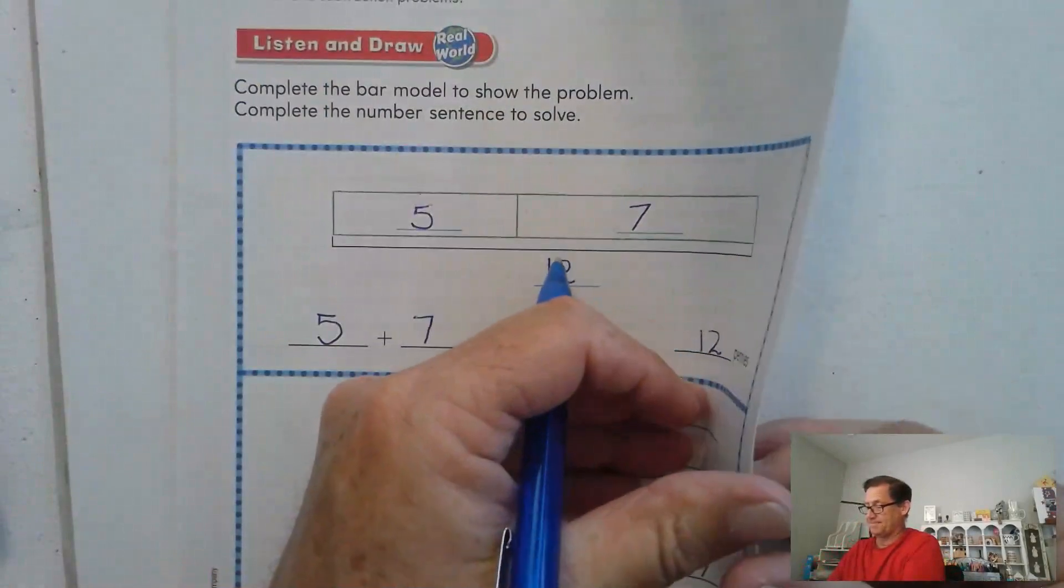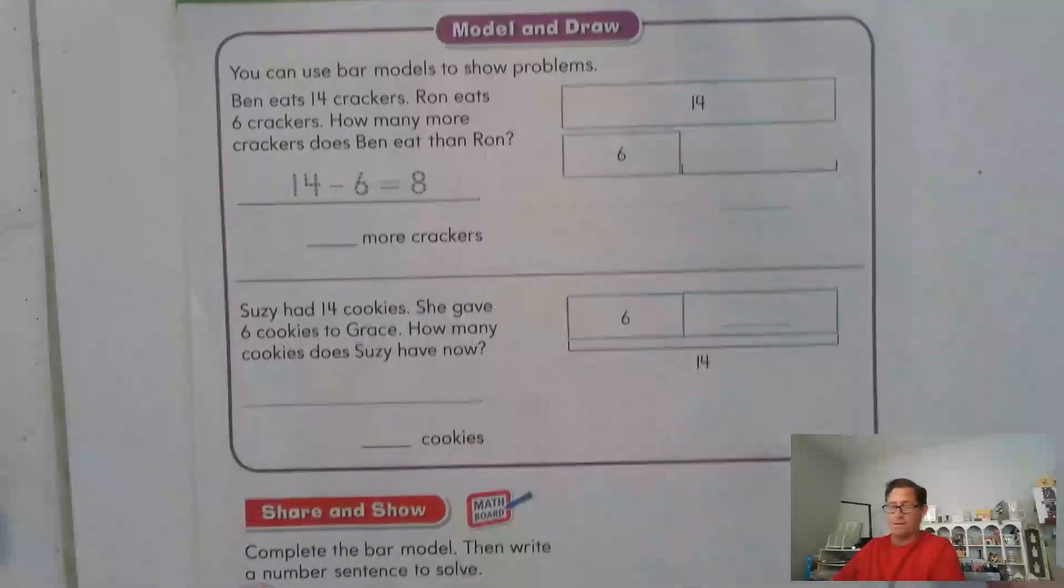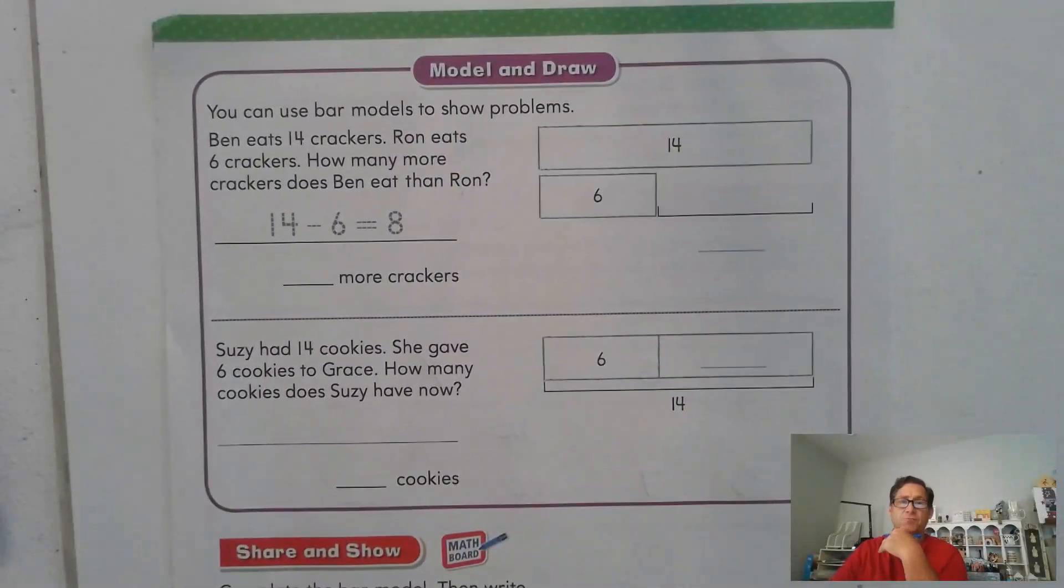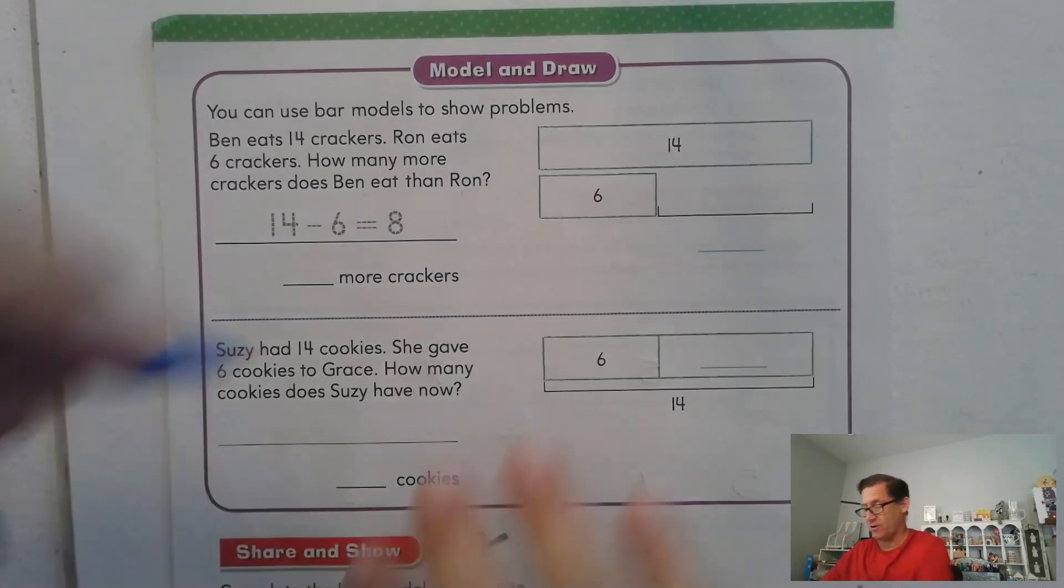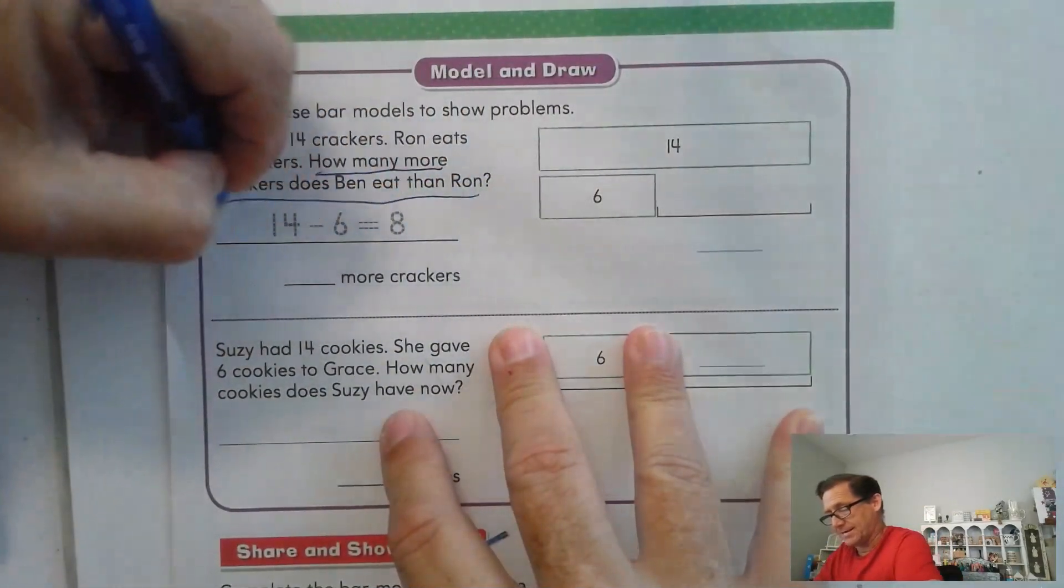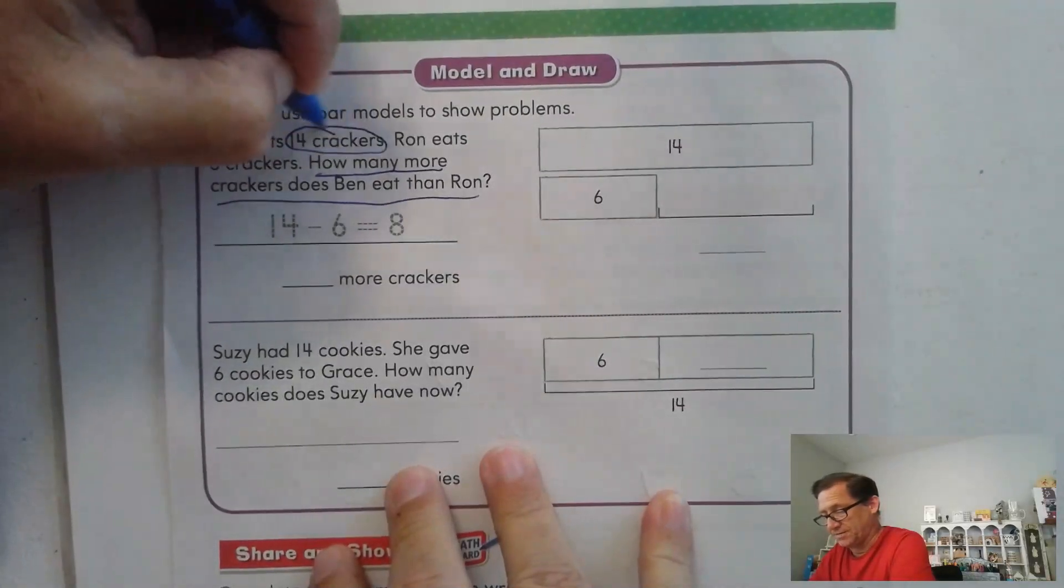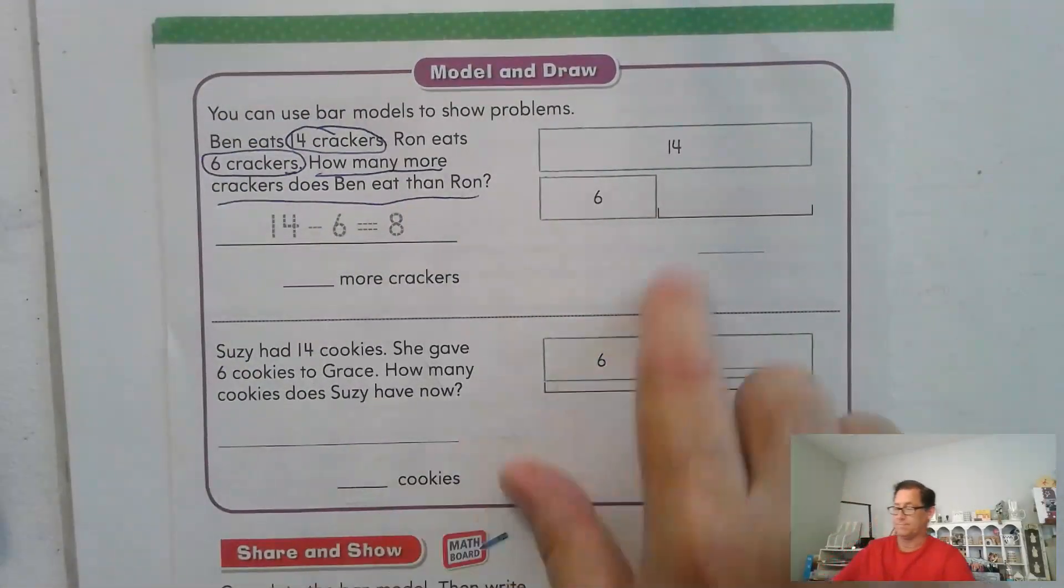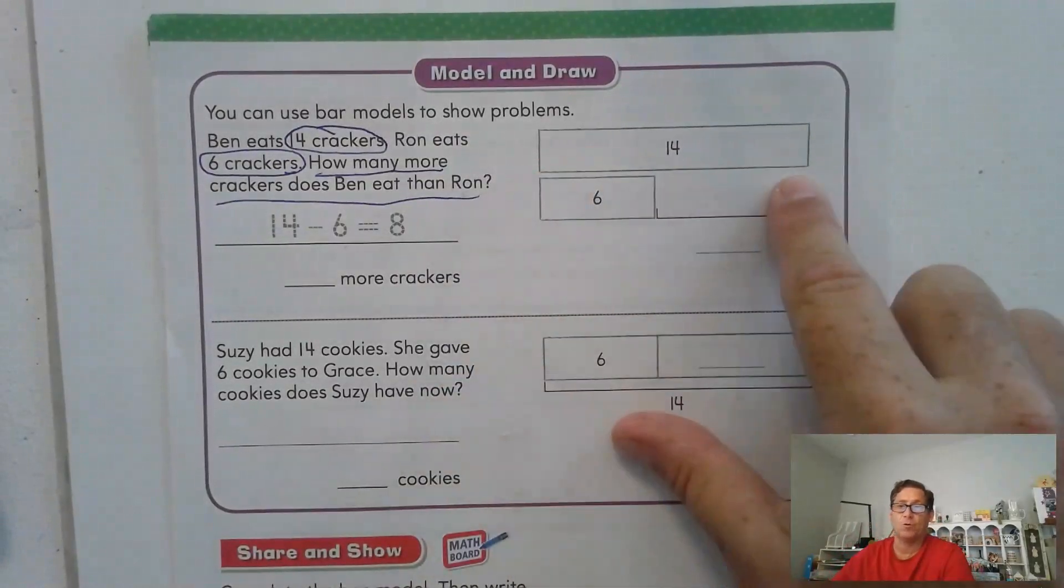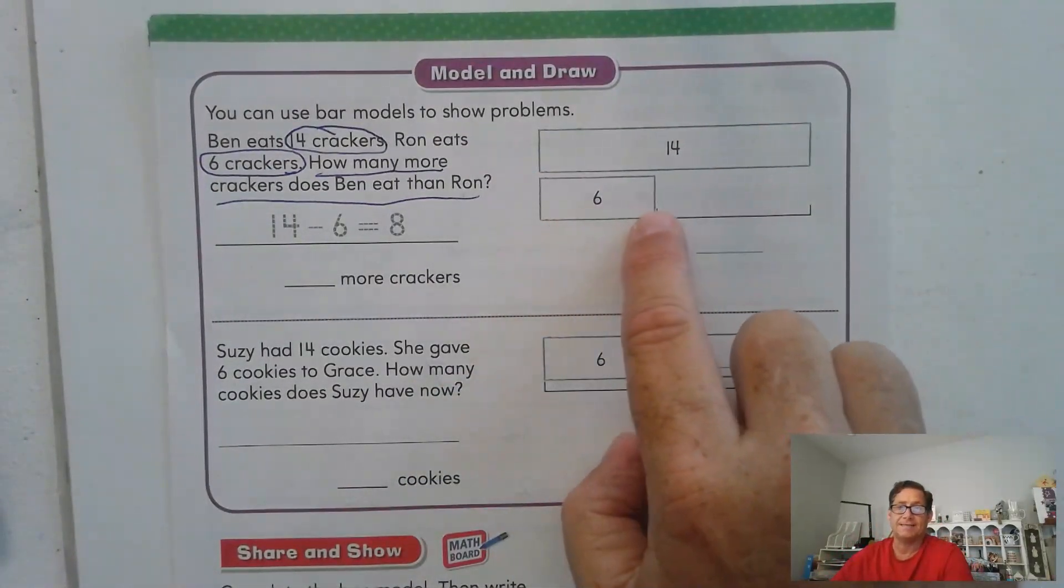All right, look at page 150. All right, so we can use bar models to show problems. For instance, Ben eats fourteen crackers. Ron eats six crackers. How many more crackers does Ben eat than Ron? So if we're doing this, I like to have my students underline the question and then circle the important information. Okay, so Ben ate fourteen crackers. Ron ate six.